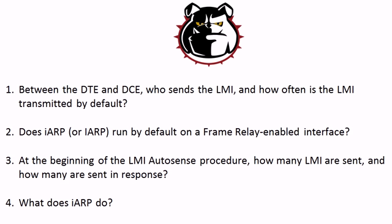Question three: at the beginning of the LMI AutoSense procedure, how many LMI are sent and how many are sent in response to that initial transmission? And then finally question four: what does Inverse ARP do?